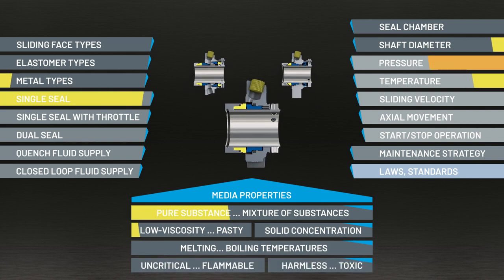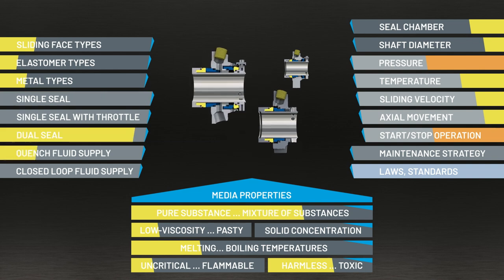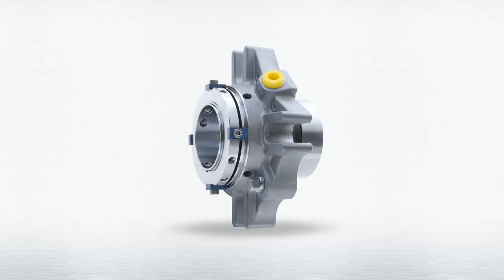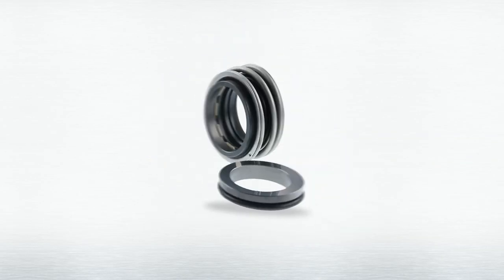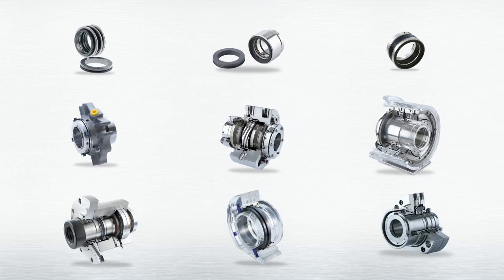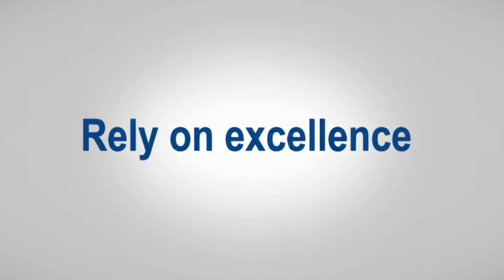For example, while a simple seal is sufficient in fresh water, for critical media and difficult conditions, sometimes redundant sealing arrangements and use of sealing liquids is required to securely prevent the escape of hazardous substances. Mechanical seals can be arranged like modular systems in many combinations. In this way, application-specific solutions are created from many reliable standards. Rely on excellence.